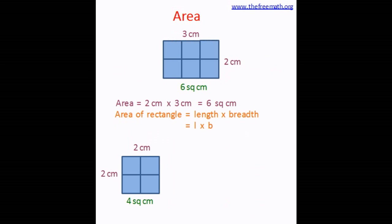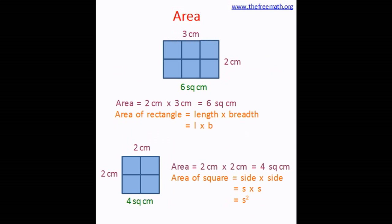Now let's look at this square. The area of this square is 4 square centimeters and each side is 2 centimeters, so 2 cm × 2 cm = 4 square centimeters. Therefore, the area of a square equals side multiplied by side, or side squared — and this formula is applicable to any square.